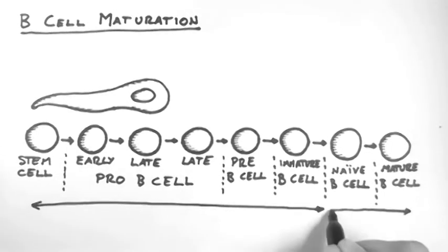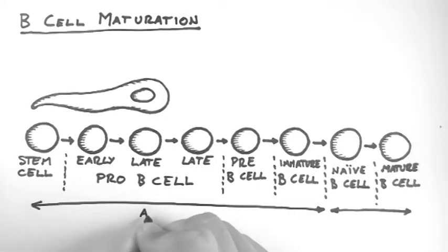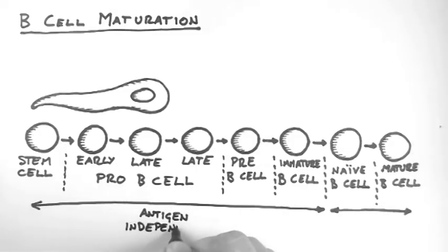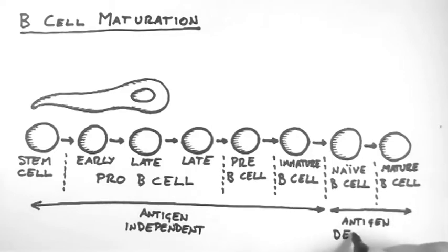The first part within the bone marrow is the antigen-independent phase because B cells progress through these stages without the presence of an antigen. The part within the secondary lymphoid tissues is called the antigen-dependent phase because to progress from a naive B cell onward requires the presence of an antigen.